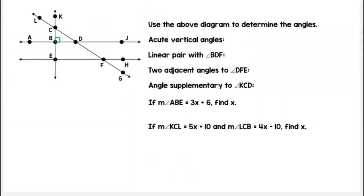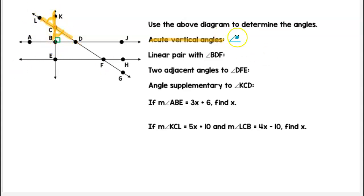Now we're going to get into some applications. We want to find two acute vertical angles here. I see an acute angle right here, and the other vertical angle to it would be here. Naming these angles properly, that is angle LCK and angle BCD. There are other examples of vertical angles we could use here, so if you see others feel free to write them down.